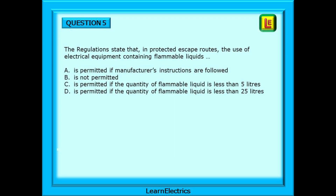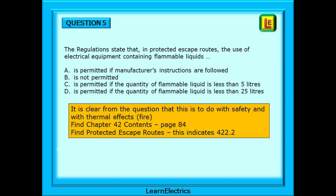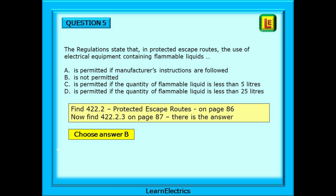Another exam question on Chapter 42: the regulations state that in protected escape routes, the use of electrical equipment containing flammable liquids — something. It is clear from the question that this is to do with safety and thermal effects/fire. Find Chapter 42 contents on page 84, find protected escape routes as mentioned in the question — the contents page indicates regulation 422. Find 422.2 on page 86, then find 422.2.3 on page 87, and there is the answer. Choose answer B — it is not permitted. Use the contents pages and gradually work your way into the answer. The question always gives you enough clues to work out where the answer is.